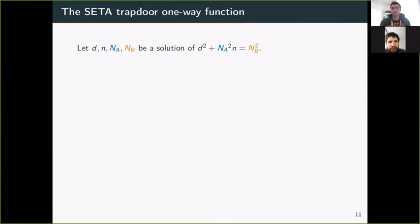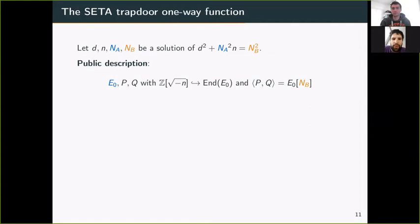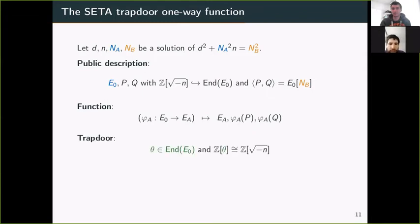The theta one-way function has integers d, n, Na, and Nb, a solution to d² + Na²n = Nb². The public description is the starting curve E₀ which contains this quadratic order ℤ[√-n], and P, Q which generate the Nb-torsion. Note you only know ℤ[√-n] is contained in End(E₀), not the embedding. The function itself takes an isogeny of degree Na from E₀ to EA, and the output is EA plus the images of torsion points P and Q under φA. The trapdoor information is θ contained in End(E₀) such that ℤ[θ] is isomorphic to ℤ[√-n].